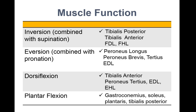The opposite would be eversion — when you evert the ankle it should be combined with pronation of the foot. Peroneus longus is definitely the primary muscle for eversion, but peroneus brevis, peroneus tertius, and extensor digitorum longus also help with that as well.